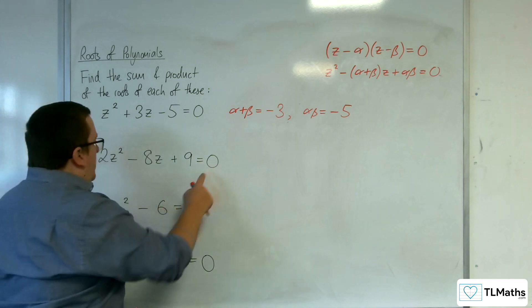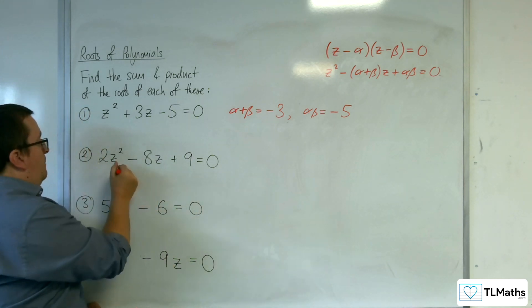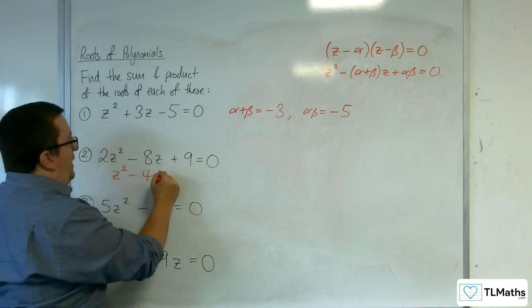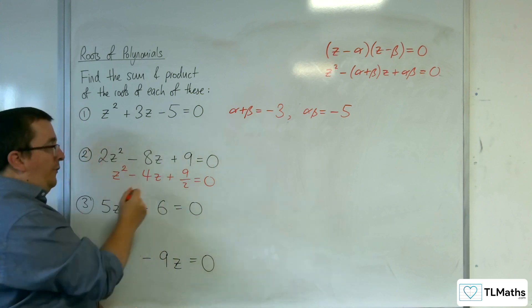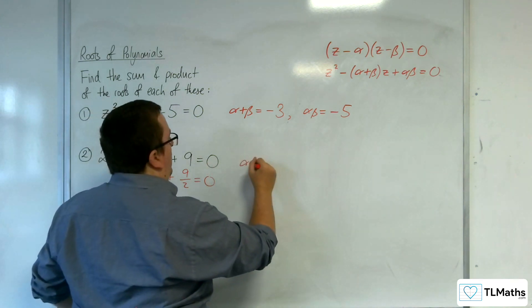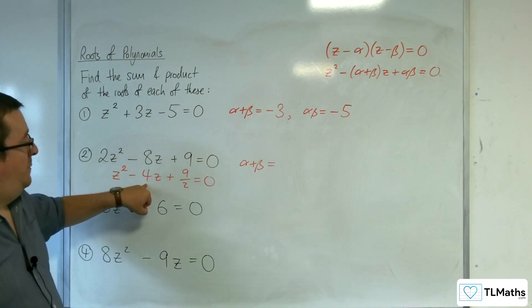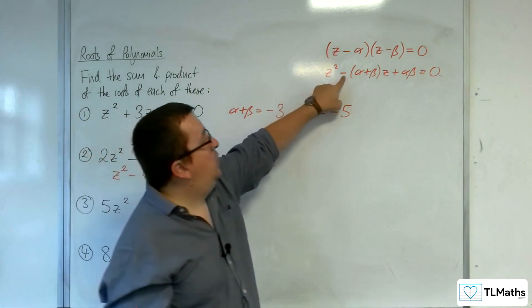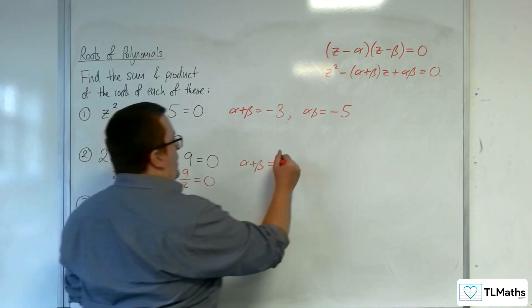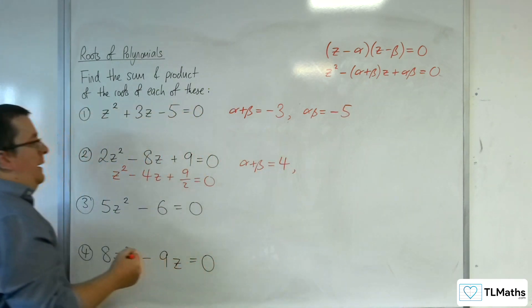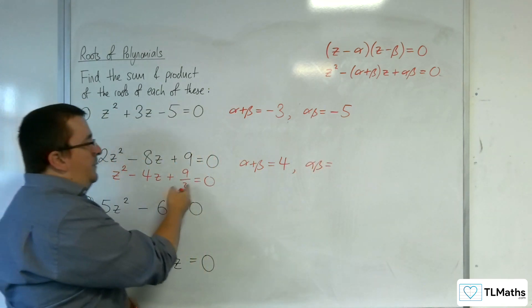Number 2, the coefficient of z squared is 2, so I need to divide through that first. So z squared take away 4z plus 9 halves equals 0. Once I'm at that stage, I can write down the sum of the roots, which has to be 4. Remember, it's take away, so 4z. Take away 4z, so that's got to be 4. And the alpha beta is the bit on the end, which is the 9 halves.